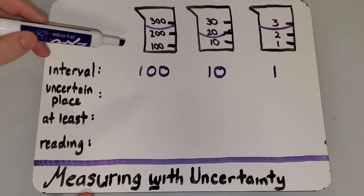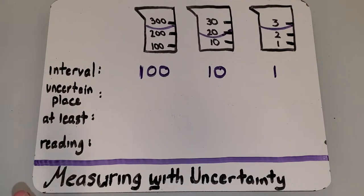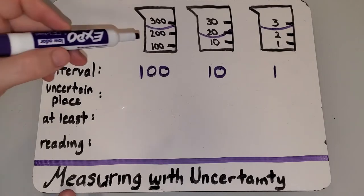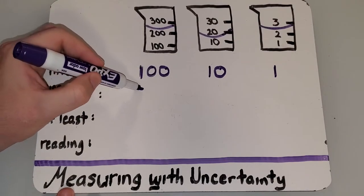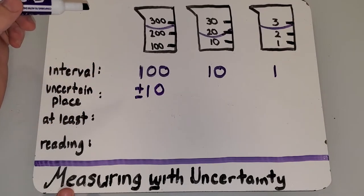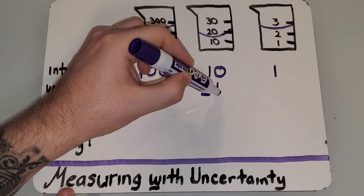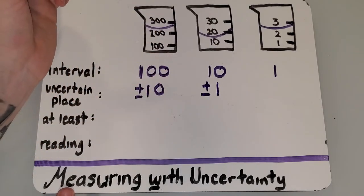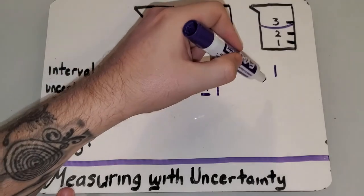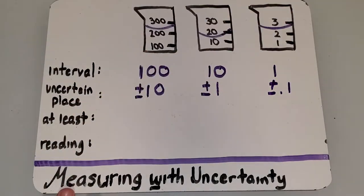Now, once we know what the interval is, we're always going to estimate a measurement one place smaller than what our interval is. So, if we're counting by 100s, we're going to be uncertain in the tens place. If we're counting by tens, we're going to be uncertain in the ones place. If we're counting by ones, we're going to be uncertain to the tenths place.